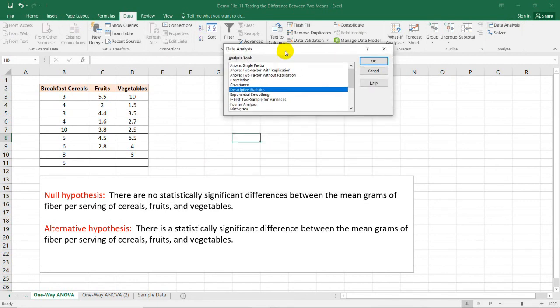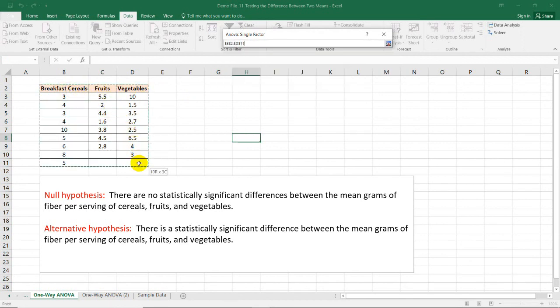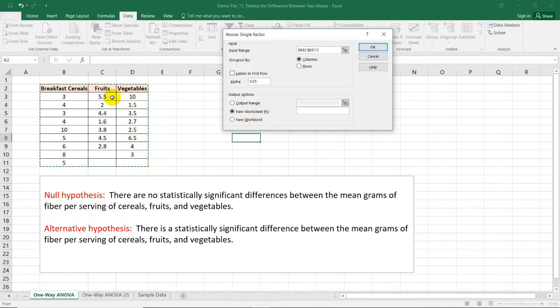And we will choose ANOVA single factor. So, one-way ANOVA is also known as ANOVA single factor test. By selecting this, we need to select our input range. In this case, we have these three columns. Since we have grouped our data into columns, we will select columns. But if you have grouped your data into rows, you select rows. I selected the labels in each column, so I need to select labels in first row.